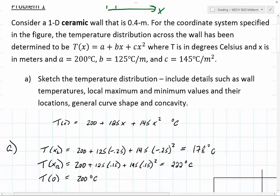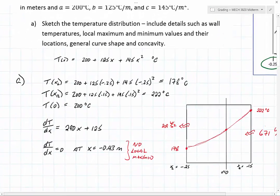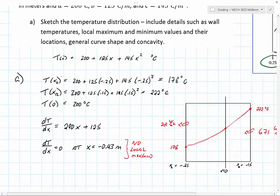We're asked to sketch the temperature distribution and include details. We need to know what the curve looks like to move through the rest of the problem. We have information about the coordinate at the left hand wall which is negative 0.25, the right hand wall, and x equals zero which is inside the wall. That gives us three points: 178 degrees Celsius, 222 degrees Celsius, and 200 degrees.